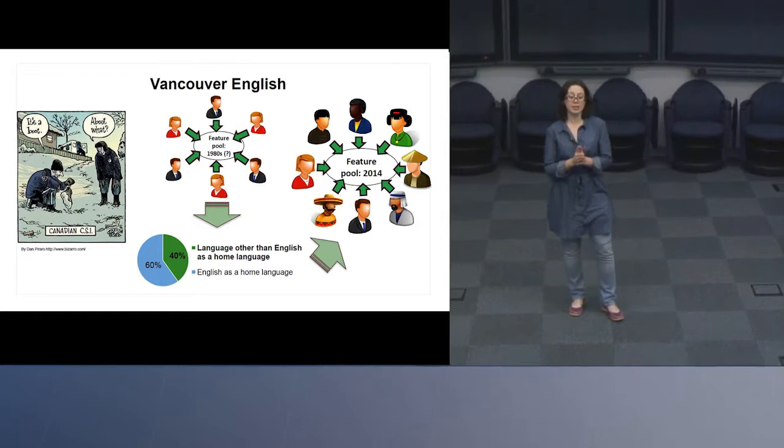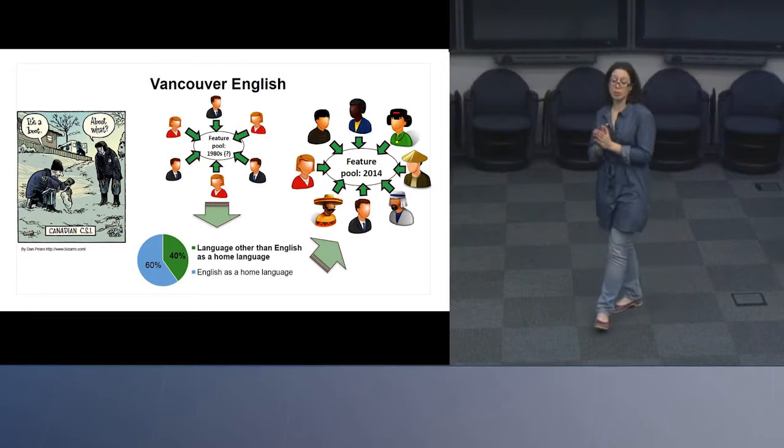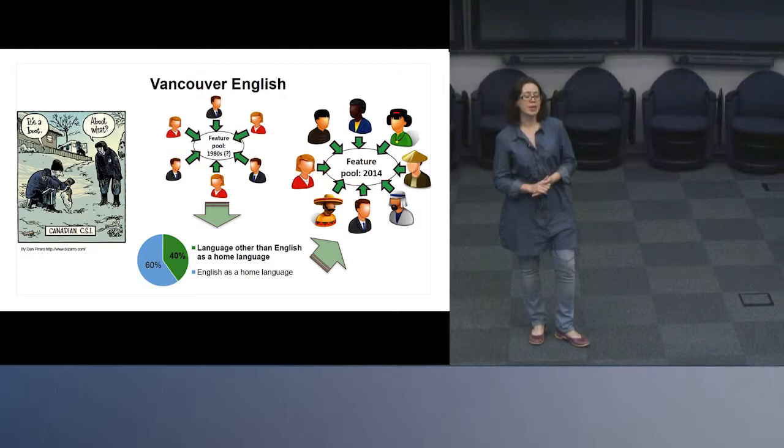How many of you know what Canadian English is? What are some of the stereotypical ways of saying things in Canada? Maybe you can think of 'eh' or, as this picture illustrates, a peculiar way of saying 'about.' Now, how many of you actually speak like that? How do people speak in Vancouver?